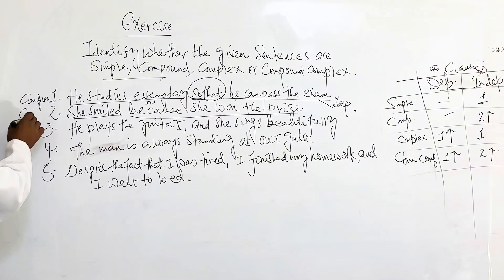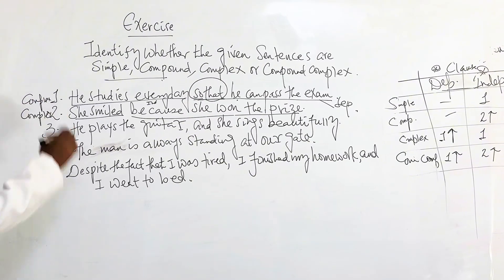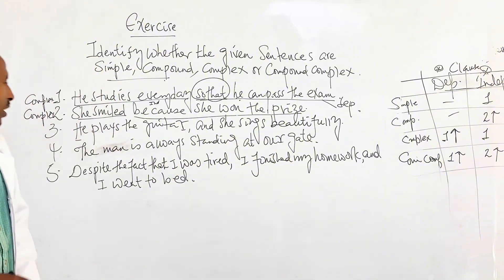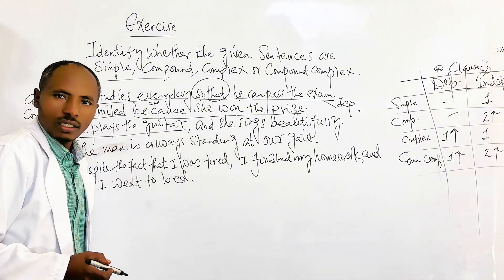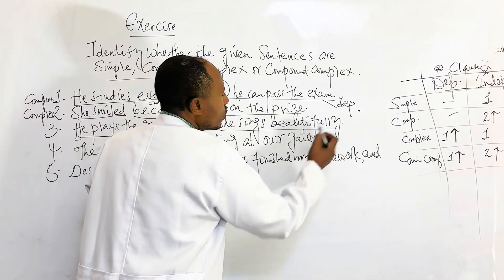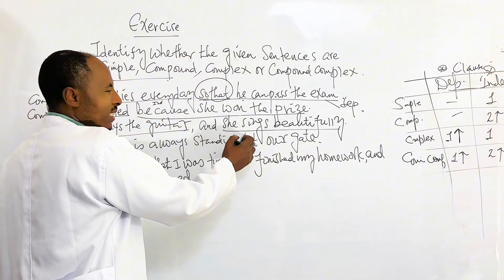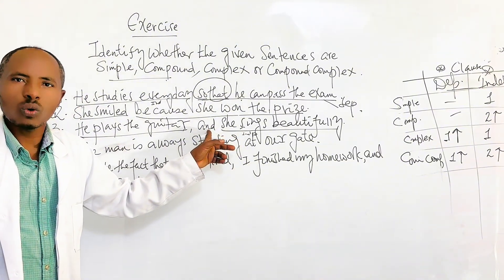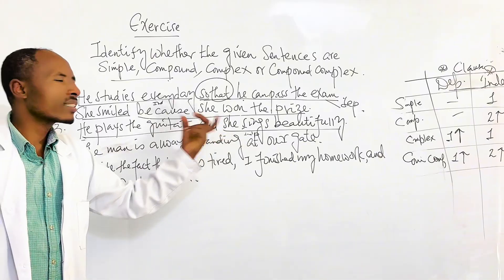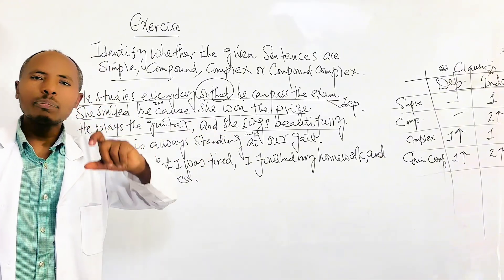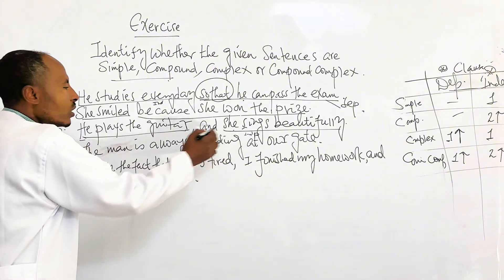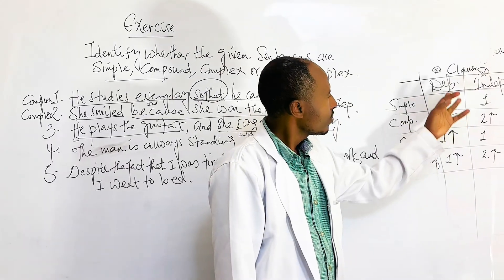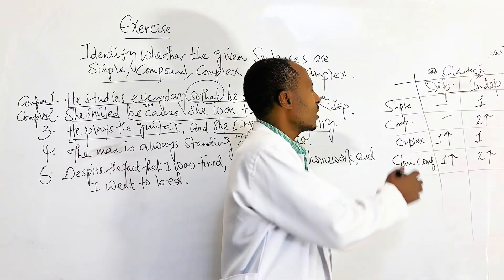The third one: 'He plays the guitar and she sings beautifully.' 'He plays the guitar' is independent. 'She sings beautifully' is also independent. 'And' is a coordinating connector joining two independent clauses with zero dependent clauses — therefore the sentence is compound.